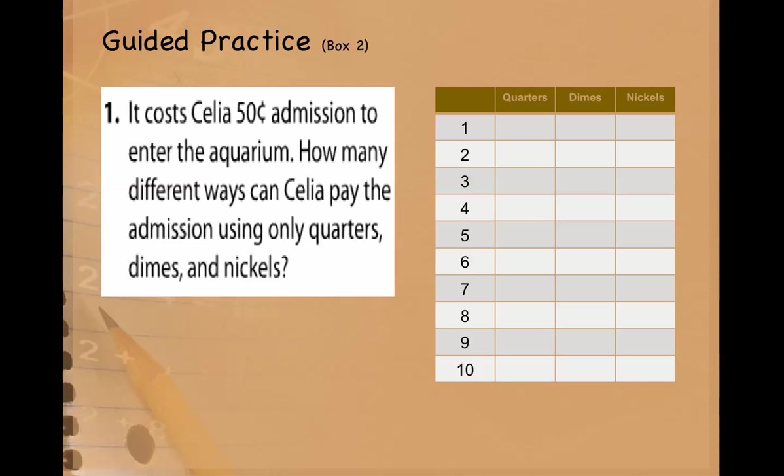In this case, I have three categories. And in each category, I would need to have the heading of how many quarters, dimes, and nickels. So here I need to know how to add the coins together and the value of each coin to make the 50 cents. So I'm going to begin.